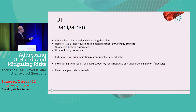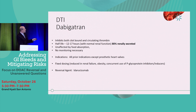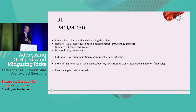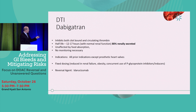Dabigatran is Pradaxa — a direct thrombin inhibitor that blocks thrombin, the lowest point on the coagulation cascade. Its half-life is somewhat longer than others in this class: 12 to 17 hours. The most important thing about Pradaxa is that it's 80% renally excreted, so it's not the drug for patients with renal insufficiency. Like all these drugs, it's unaffected by food, no monitoring is necessary, it's indicated for most conditions except prosthetic heart valves, fixed dosing, and the reversal agent is Praxbind, or idarucizumab.